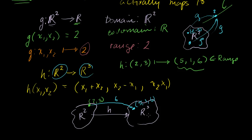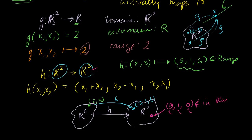My question: if I have the point (5, 1, 0) in r3, is it a member of the range? It's definitely a member of the codomain — it's in r3. But is it in the range? If 5 is the sum of two numbers and 1 is their difference, we're dealing with 2 and 3. But there's no way the product of 2 and 3 equals 0. So this point is not in the range. The range is a proper subset of r3 — there are many points in r3 that aren't in the range.